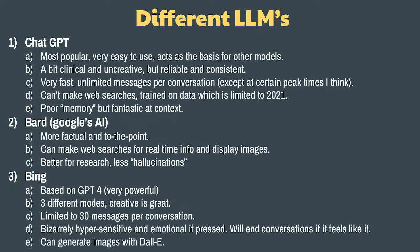BARD is Google's AI, and it's more factual and to the point. It suffers less from what we call hallucinations — when the AI doesn't know the answer to something and just makes it up instead. BARD is more focused on research; you can get more factual info out of it, it can make web searches for real-time info, and it can display images. I'd look at it as almost like Google 2.0. Bing is the most chaotic but the most fun. It's rooted in GPT-4, very powerful, but limited to 30 messages per conversation. Creative mode is probably the best one to use and is really strong.